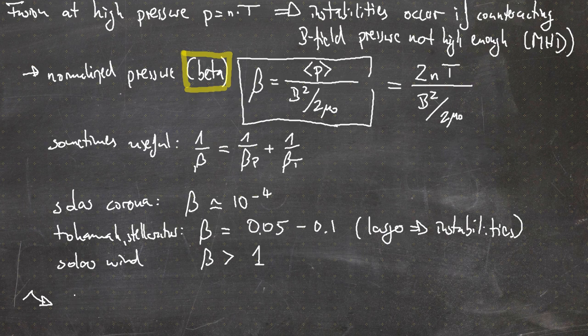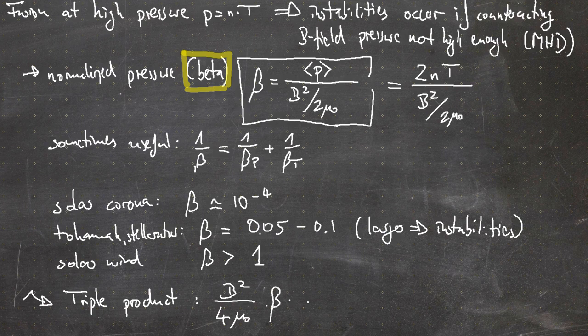Beta can be used to rewrite the triple product into a slightly different form: (B²/4μ₀) · β · τ_e > F. Since β is limited by physics and B cannot be arbitrarily large either, it is important for the energy confinement time τ_e to be large.